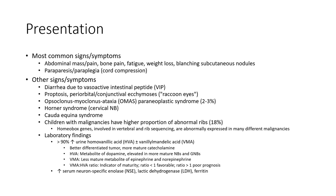Horner syndrome, cervical ganglion syndrome, cardiac syndrome. Children with malignancy have high proportion of chromosomal abnormality, 18%. Oncogenes involved in vertebral and gene sequencing are abnormally expressed in many different molecules.